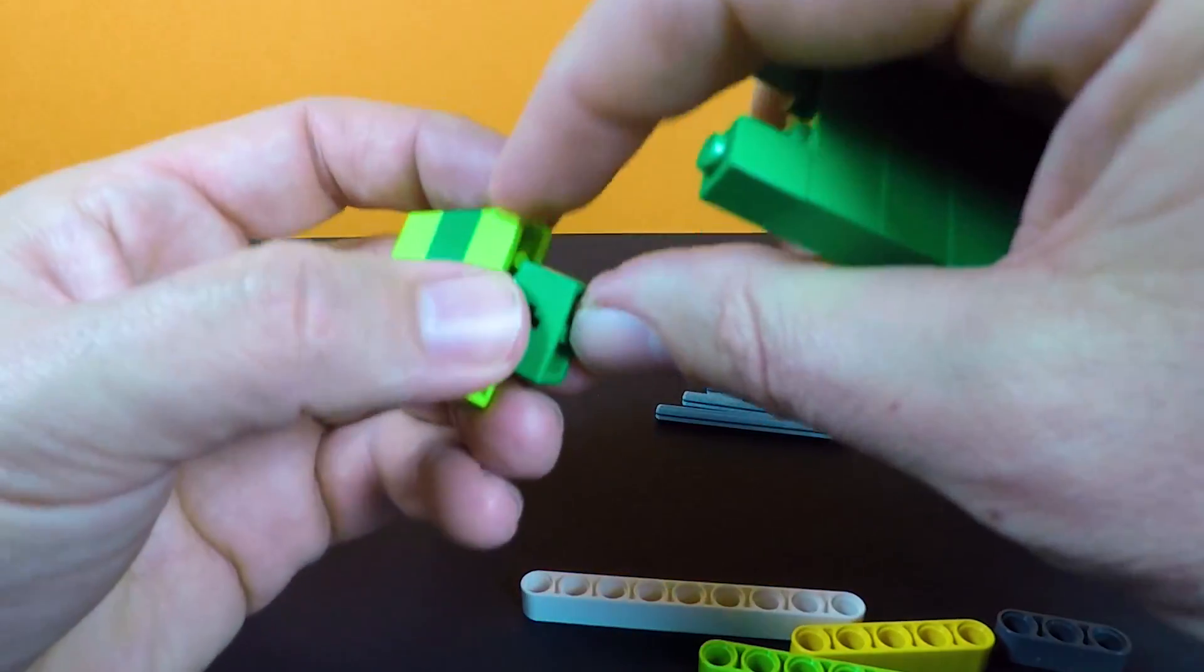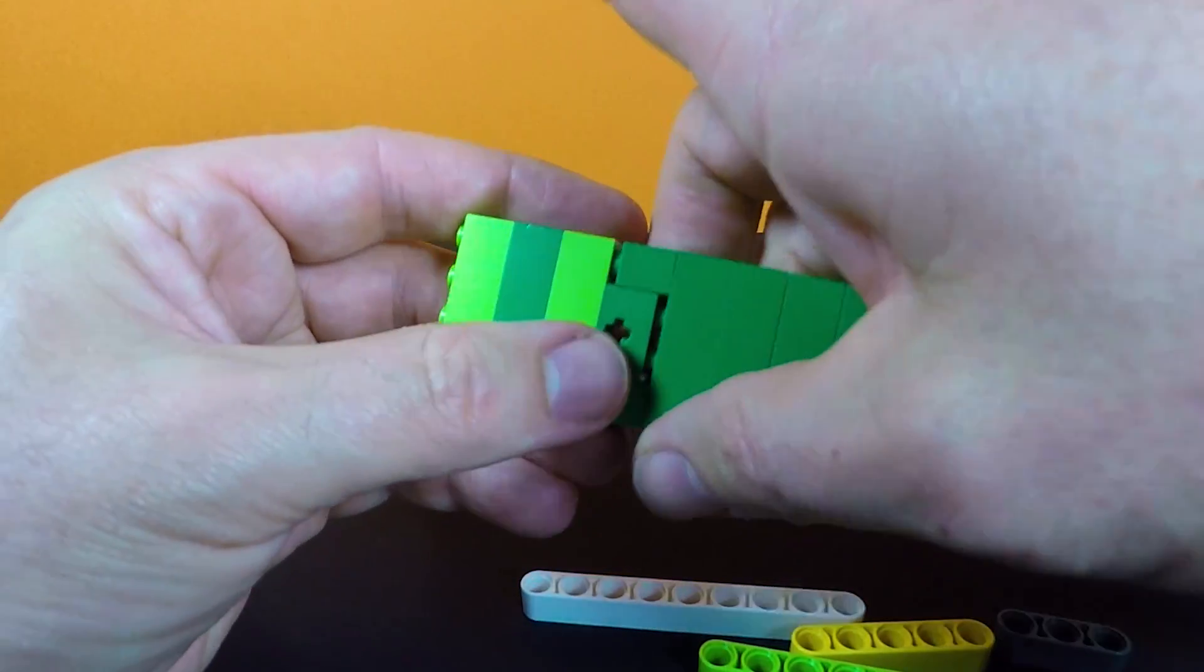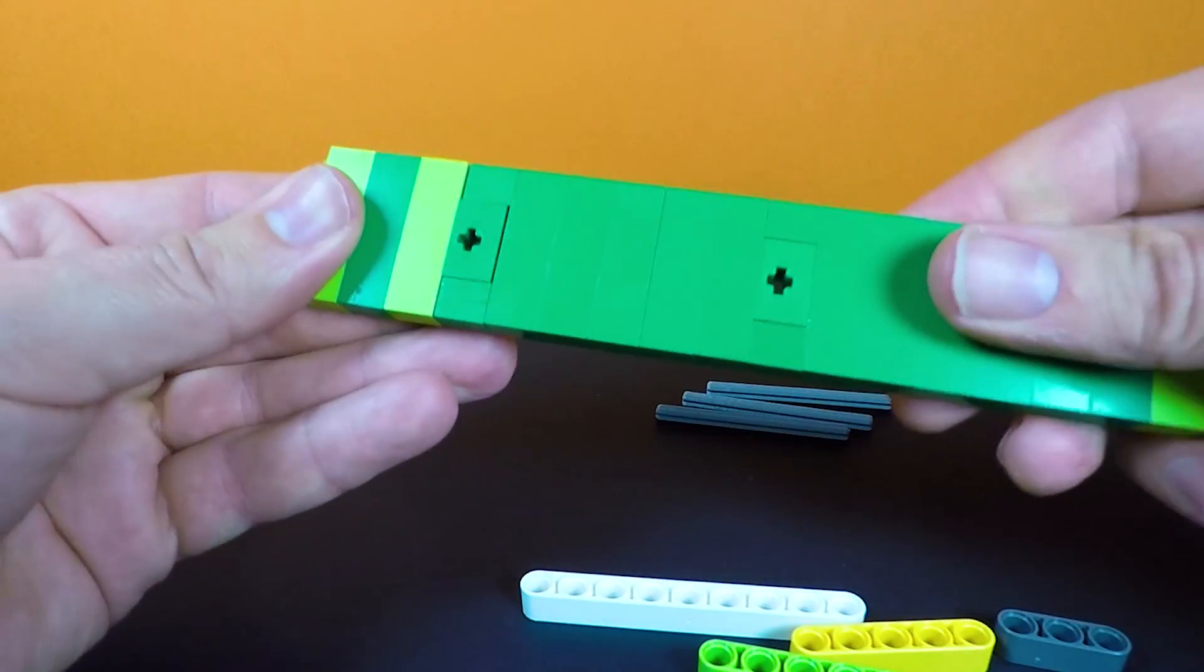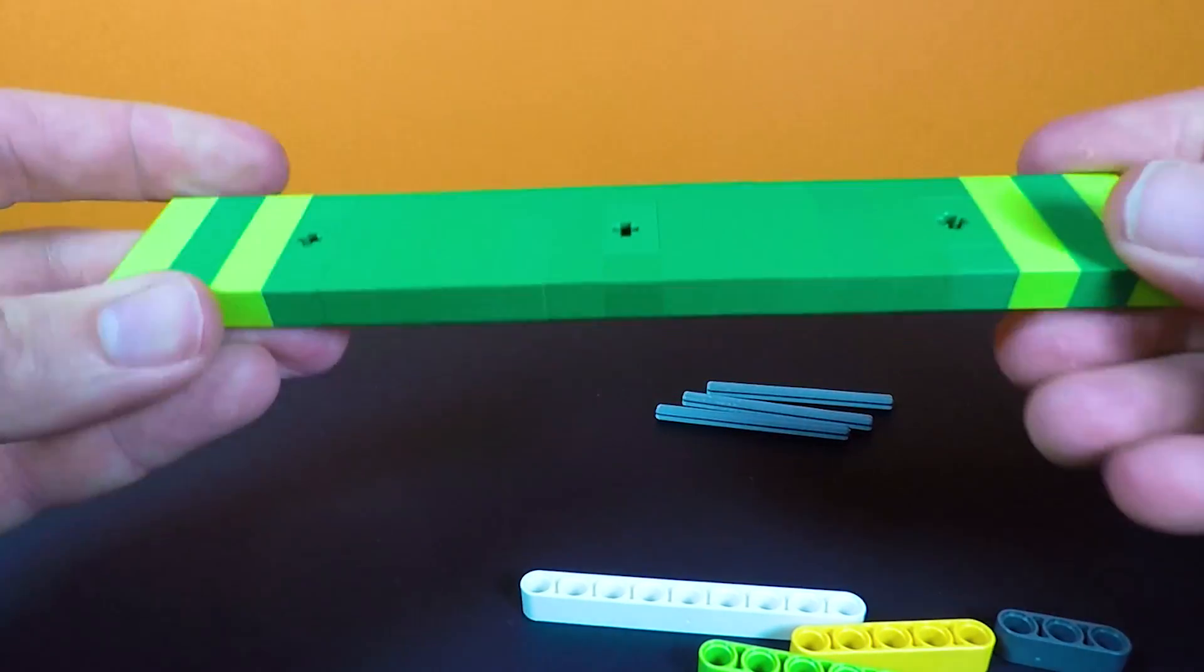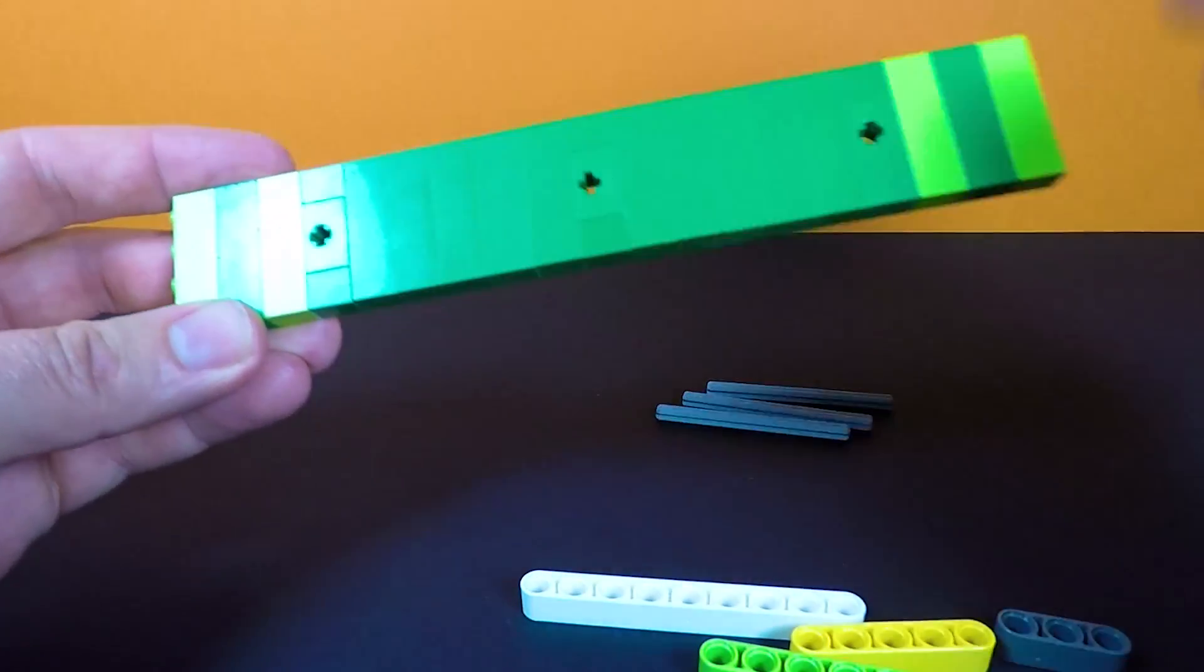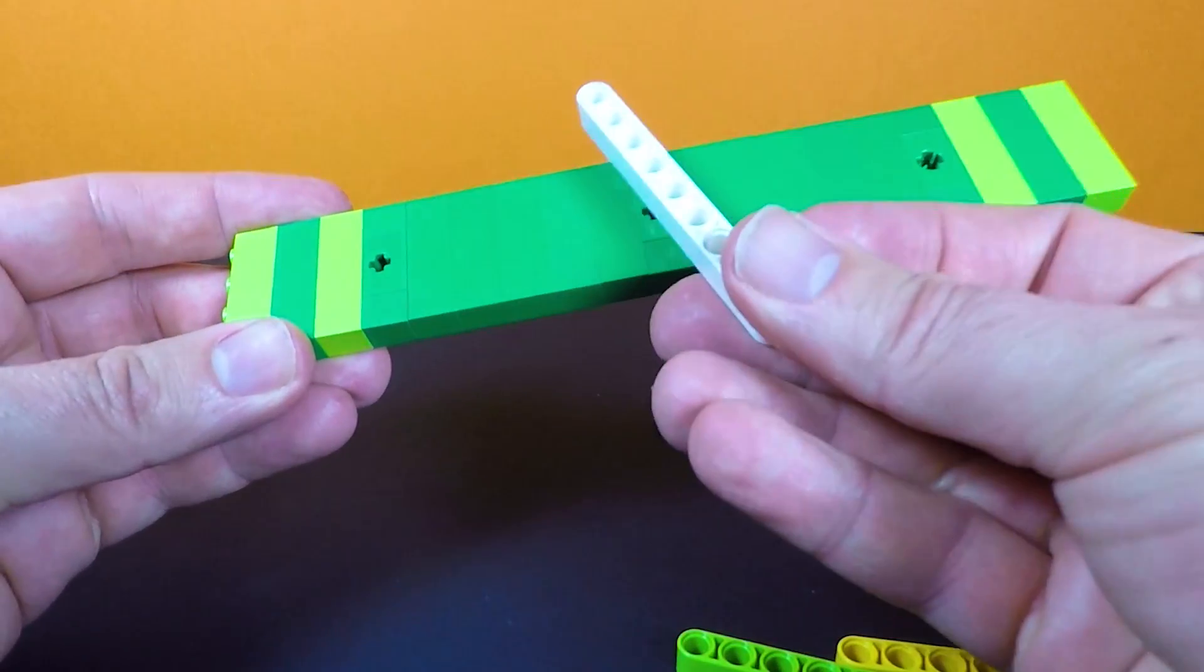So I'm just using some 1x4 plates and some 1x1s and we just create a simple base like this. Now the distance between the holes doesn't really matter because you can spin these around and they can be as thin as that.